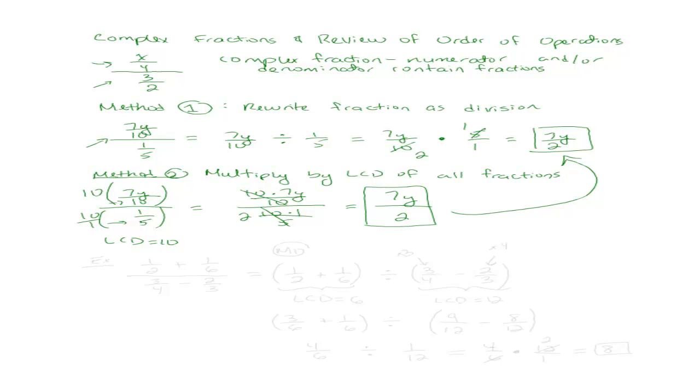Questions? So I'll do one using both methods so we can get a little accustomed to it. So let's do an example. Let's say we want to simplify 1 half plus 1 sixth over 3 quarters minus 2 thirds. So let's try method 1 first. So what was method 1? To write this as division. So I'm going to write the top divided by the bottom. So I'm going to write 1 half plus 1 sixth divided by 3 quarters minus 2 thirds.